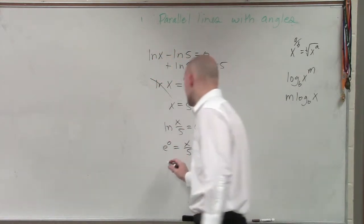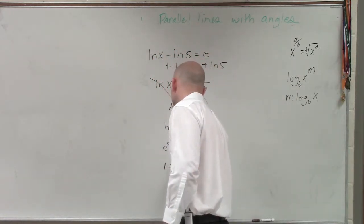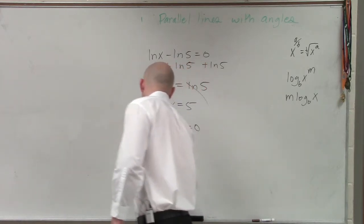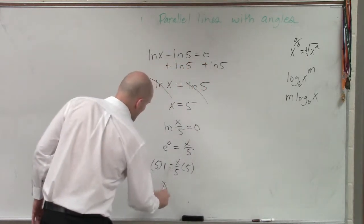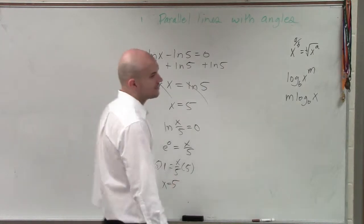e to the 0 is 1 equals x over 5, multiply by 5, multiply by 5, x equals 5. All right.